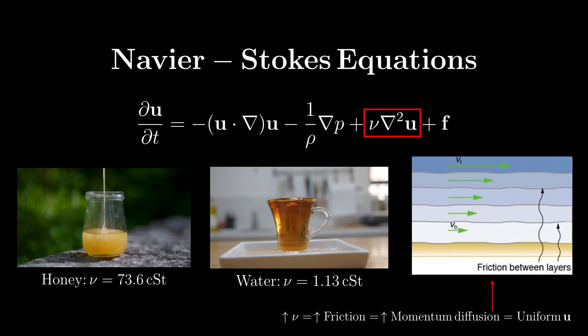For example, when pouring honey, its viscosity dampens velocity differences, so the fluid flows more smoothly and uniformly. In contrast, water with its lower viscosity allows for more swirling and larger variations in velocity as it flows, resulting in a less uniform velocity profile. This dampening effect of viscosity is what this term models mathematically.